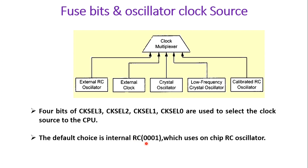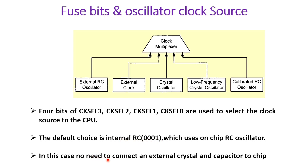The default choice is the internal RC oscillator. For that, you need to set these bits to 0001. Once you purchase an ATmega32 or any other AVR microcontroller, the default bits are 0001, meaning it will use the internal RC oscillator clock at a frequency of 1 MHz, which we will discuss later. With this option, there is no need to connect any external crystal or capacitor to the chip, which also saves hardware cost.